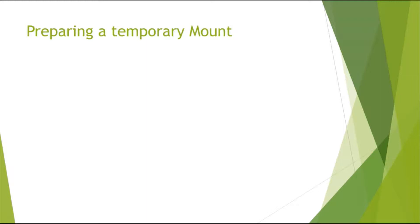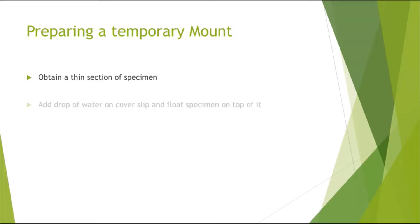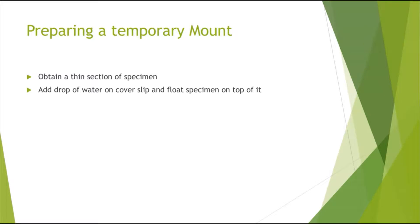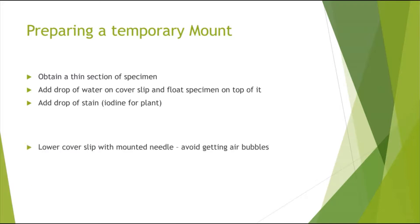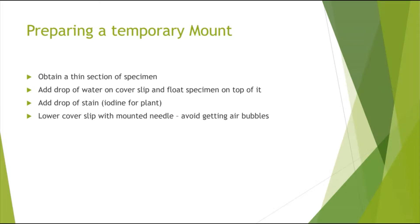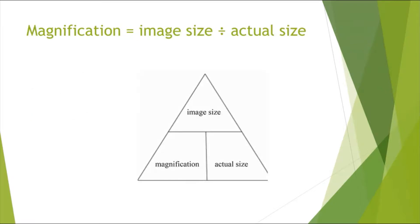You need to know how to prepare a temporary mount, as this has come up as a 3 or 4 mark question. First, obtain a thin section of a specimen — for example, a thin section of a leaf. Then add a drop of water onto the coverslip. Float the specimen on top of the water drop. Add a drop of stain — for example, iodine for a plant leaf — then lower the coverslip with a mounted needle to avoid air bubbles.